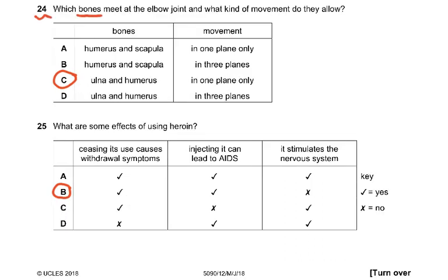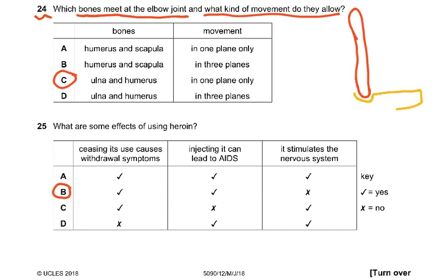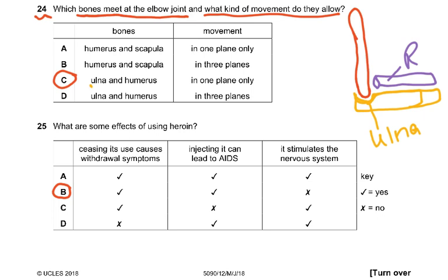Question 24: which bones meet at the elbow joint and what kind of movement do they allow? The humerus, the ulna — which makes a U-shape — and the radius meet here. The bones which meet at the elbow joint are the ulna and the humerus. This allows movement only in one plane; you can only straighten or bend your arm at the elbow, so it's only 180 degrees.